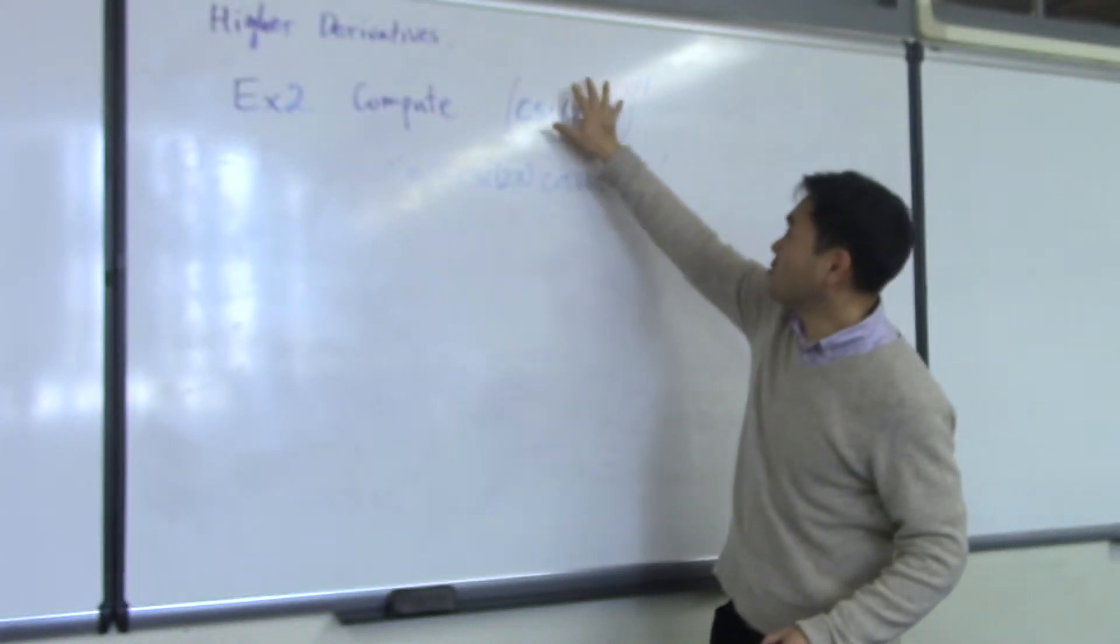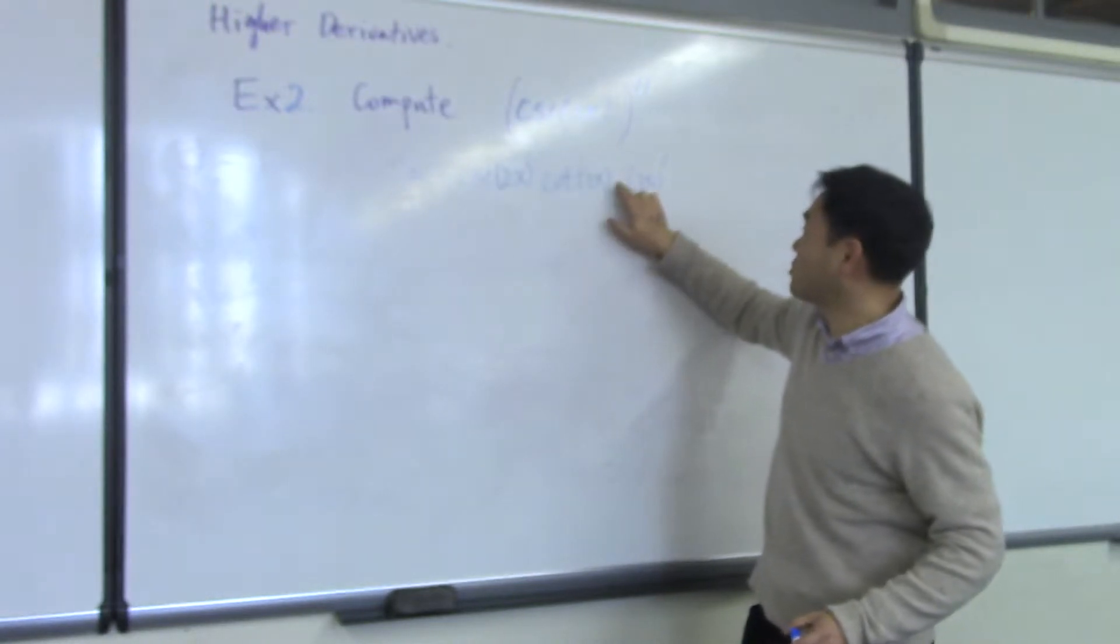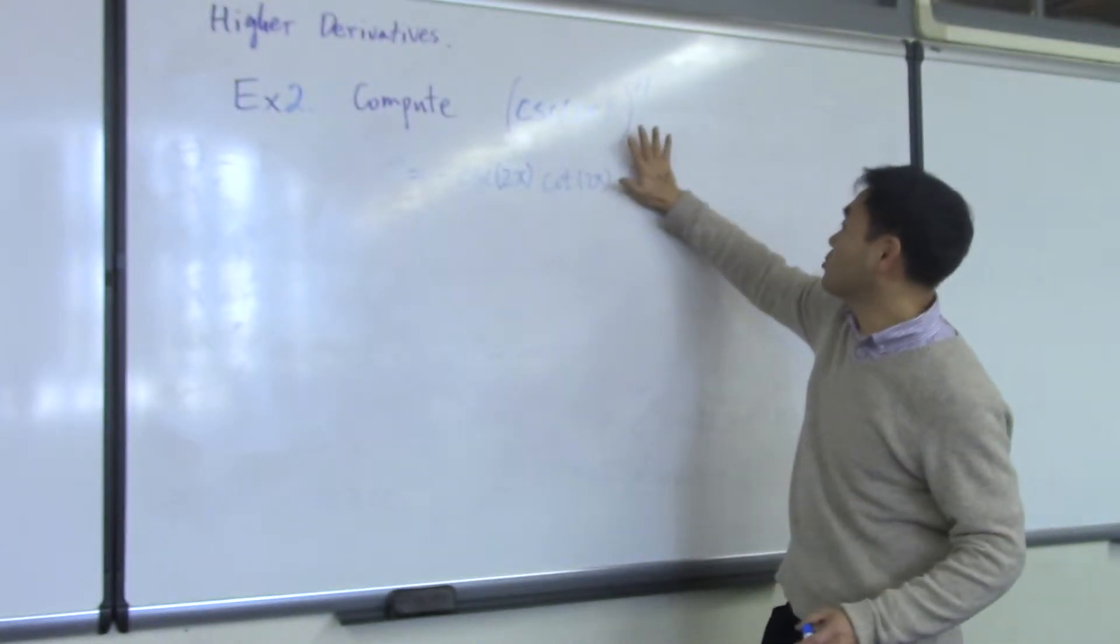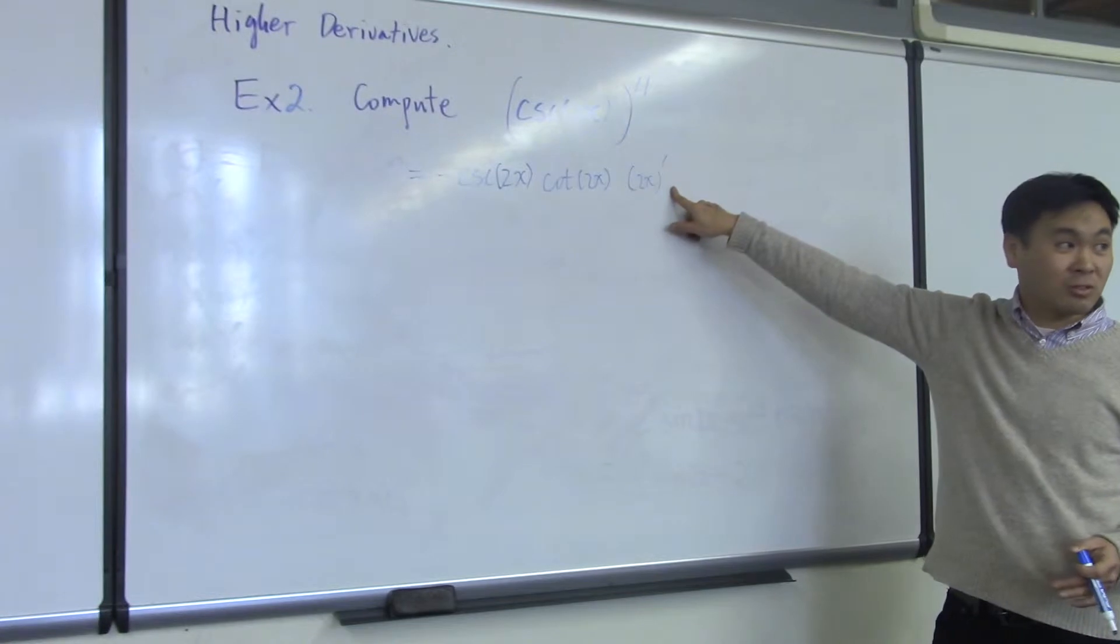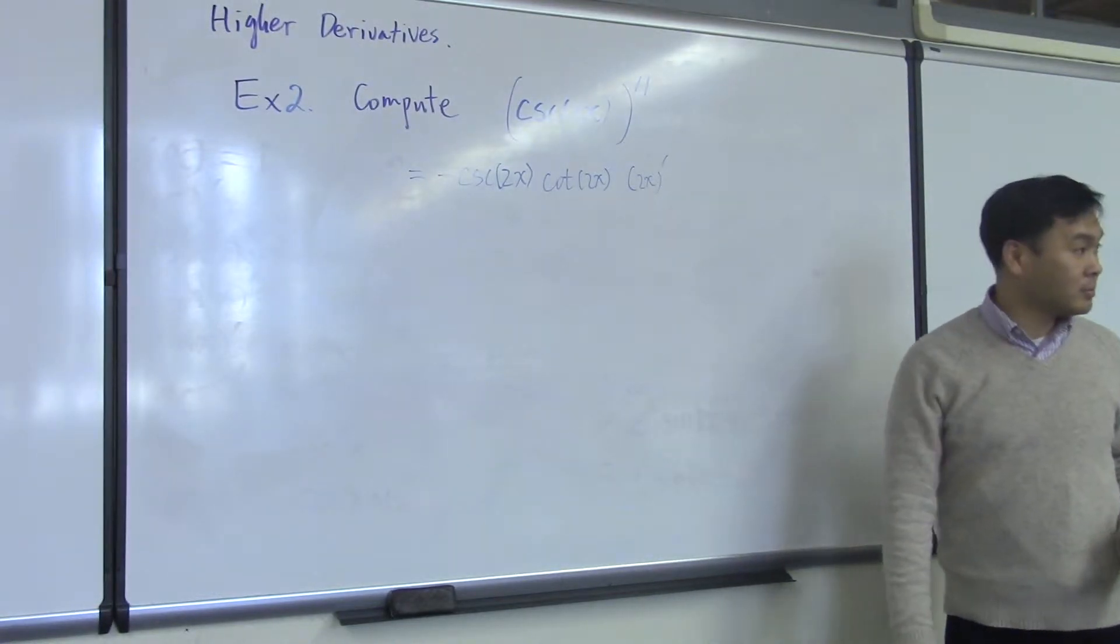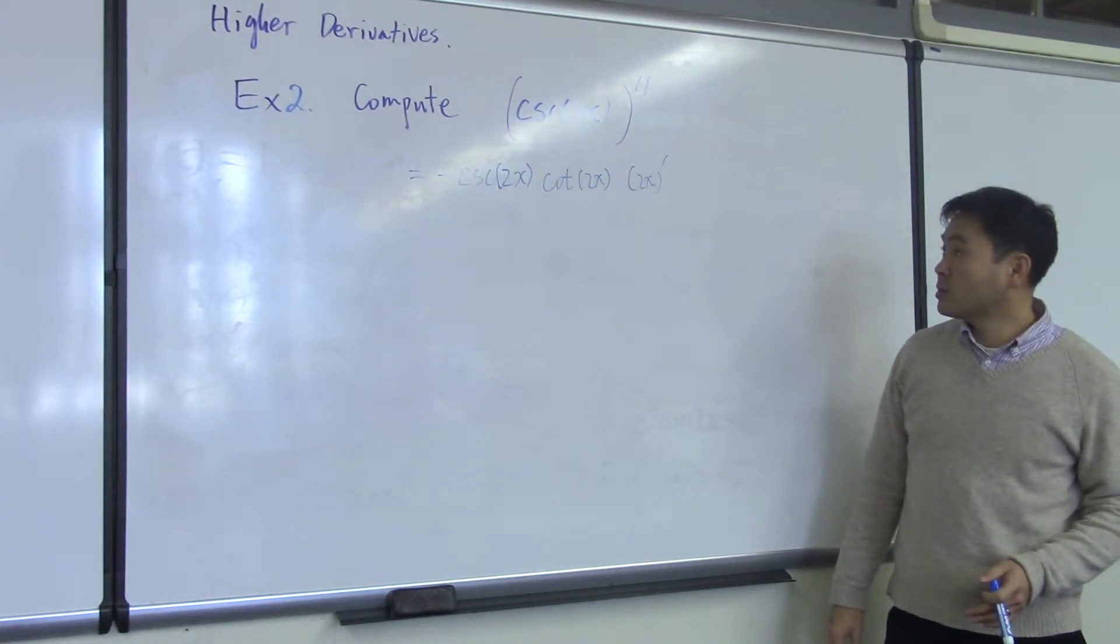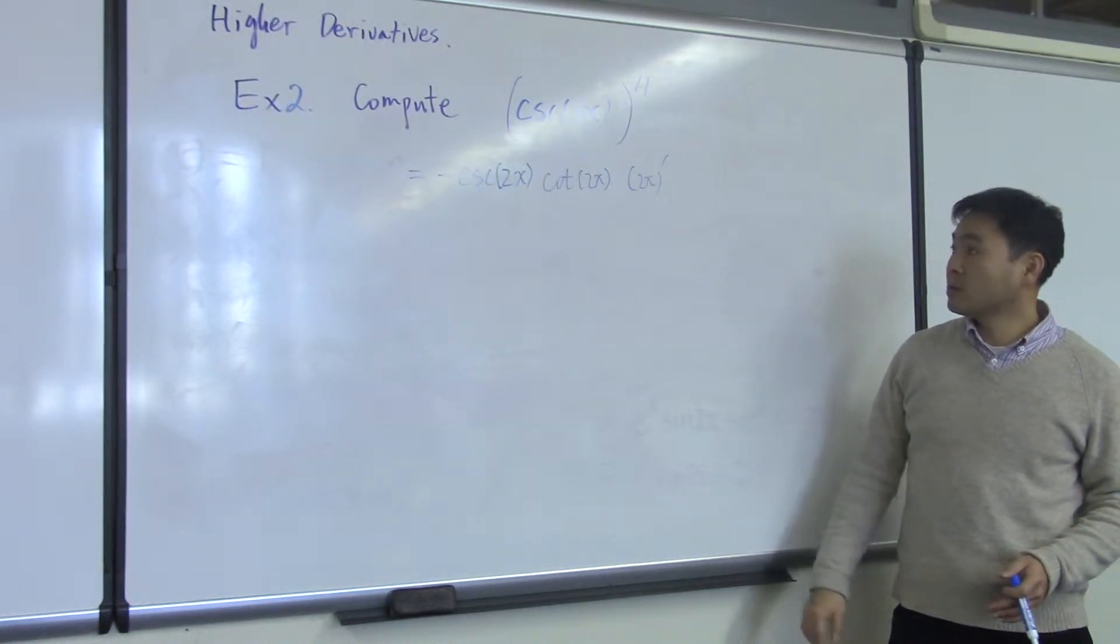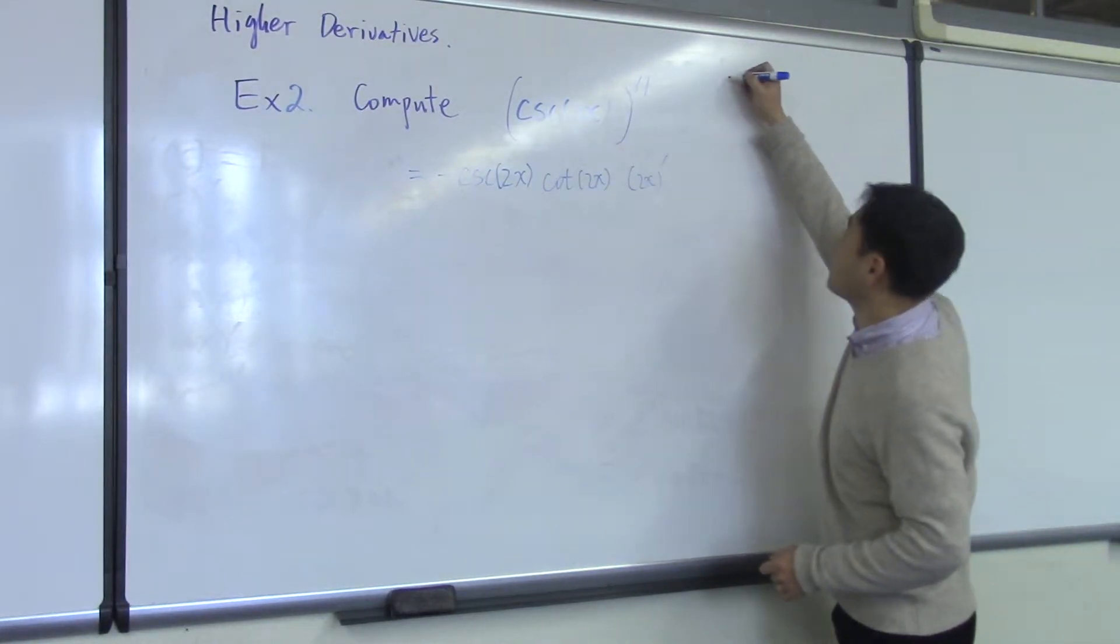The chain rule says just write the derivative pretending that these are x's, but then we multiply by what's inside. You take out the derivative of the inside function—that's what it says. So you only multiply this once.